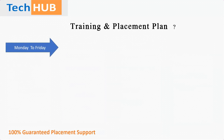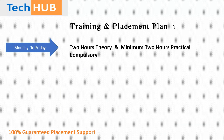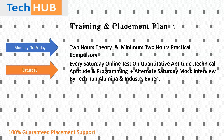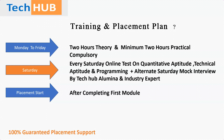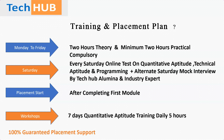Our training plan runs Monday to Friday: two hours of theory and a minimum of two hours of practical daily. Candidates who want more practical time can stay in the lab. Every Saturday, we organize online tests on quantitative aptitude, technical aptitude, and programming. Every alternate Saturday, we organize mock interviews by Tech Hub alumni and industry experts. Placement starts after completing the first module. We also organize a seven-day workshop on quantitative aptitude, five hours daily.